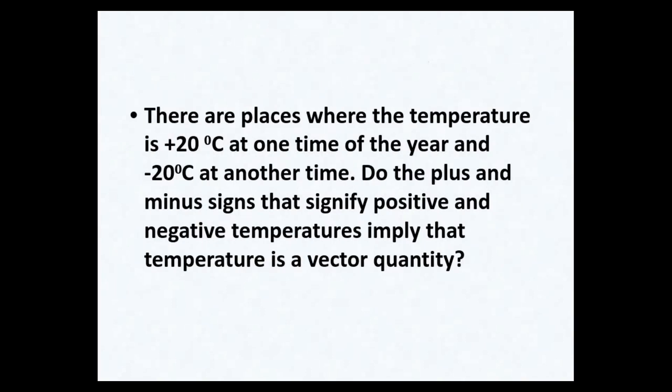Consider this question: there are places where the temperature is positive 20 degrees Celsius one time of year and negative 20 Celsius at another. Do the plus and minus signs designating positive 20 and negative 20 imply vector quantities? We have to ask ourselves: is the plus giving us a direction? It is not — it is just indicating an amount. Positive 20 and negative 20 are amounts, so this is a scalar quantity, not a vector.